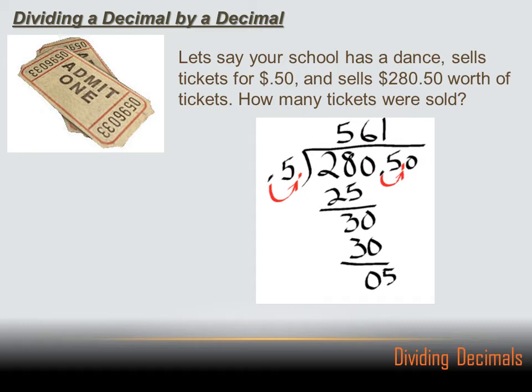Well, 561 tickets, that's a bigger number than 280. That's a bigger number than .5. So I divide it, and I got a bigger number. That seems weird. But if you think about it, it's not weird.